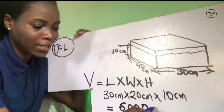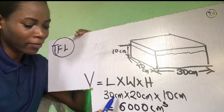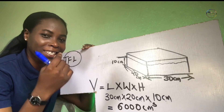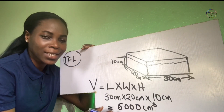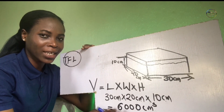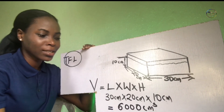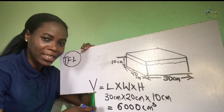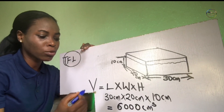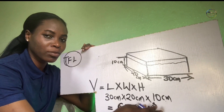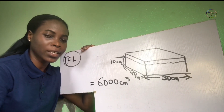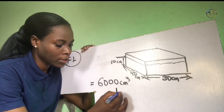That gives us 6,000 centimeters cubed, because we are multiplying centimeter by centimeter by centimeter — cm in three places. So the volume of water is 6,000 cm³. Now in order to get our volume in liters, because volume of water is usually represented in liters, we have to convert it from centimeters cubed to liters. Let's convert using the conversion table.